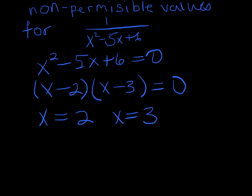But what we're saying here is that we don't want x to be 2, we don't want x to be 3, because that's what's going to create our 0 denominator. So those are your non-permissible values.